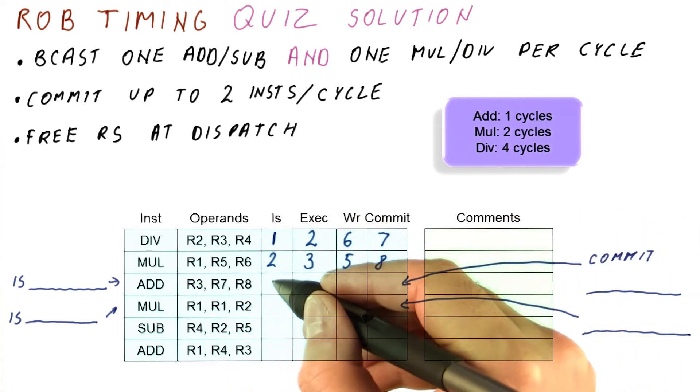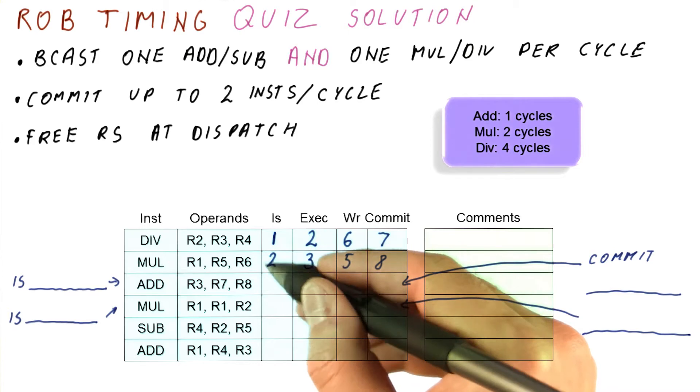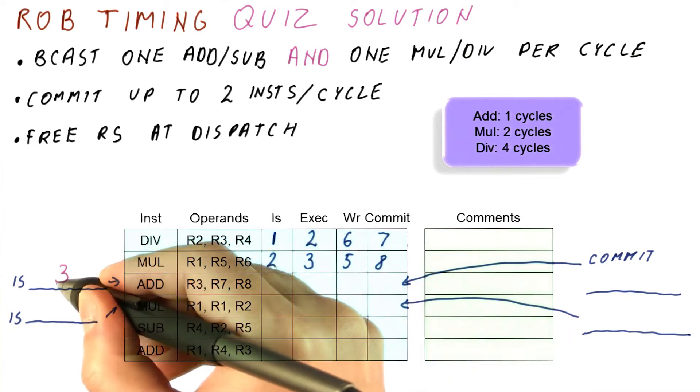For issue, the add will try to issue in the third cycle, if we have a reservation station available. And we do, because we are currently using both of the multiply divide reservation stations, but the add one is free. So the add issues in cycle three.